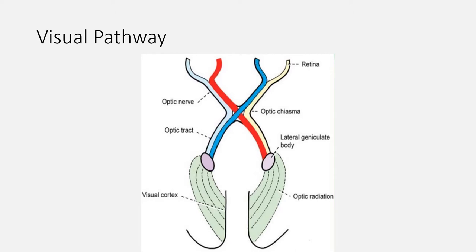The visual pathway describes the anatomical pathway by which electrical signals generated by the retina are sent to the brain. The nerve fibers of the retina collect together at the optic disc before passing out of the eye through the orbital bones and into the brain via the optic nerve, which is the second cranial nerve. The optic nerves from each eye meet at the optic chiasm. At this point, the nerve fibers associated with the nasal half of the retina from each eye cross over, so that on leaving the optic chiasm and passing into the optic tracts, the nerve fibers from the nasal retina of one eye travel down the optic tract with the nerve fibers originating in the temporal retina of the other eye.